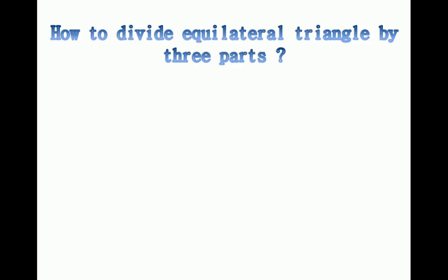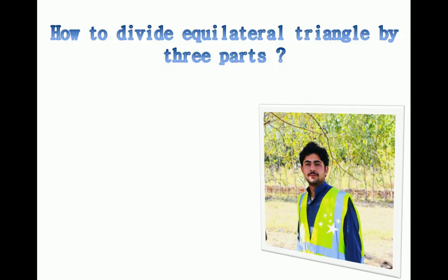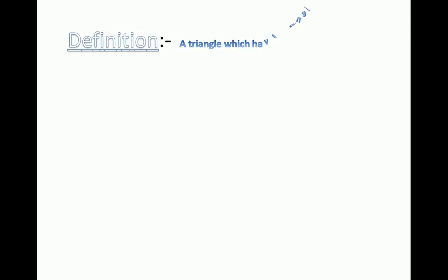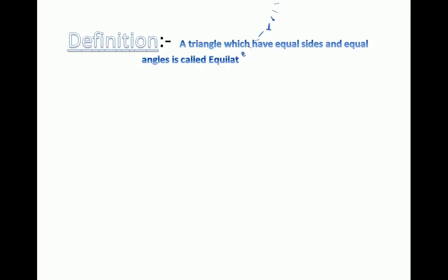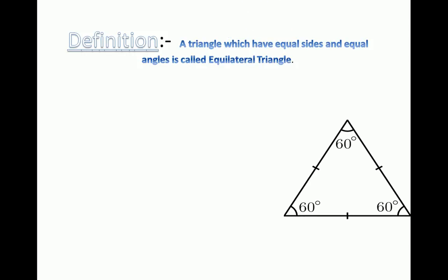Hello everyone. Today I'm going to show you in this presentation how to divide an equilateral triangle into three parts. The definition of an equilateral triangle is a triangle which has equal sides and equal angles. Look at this — this is an equilateral triangle which has equal sides and equal angles.